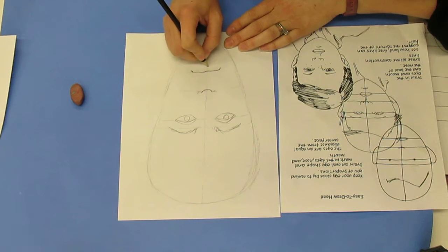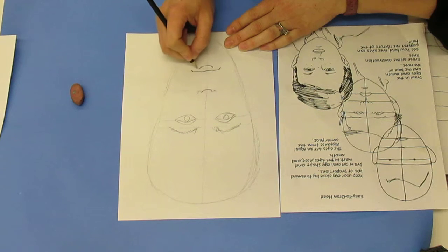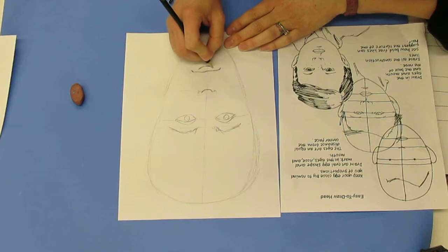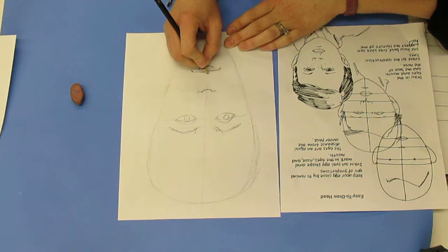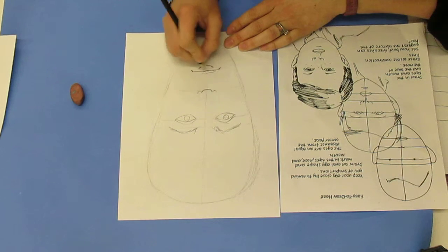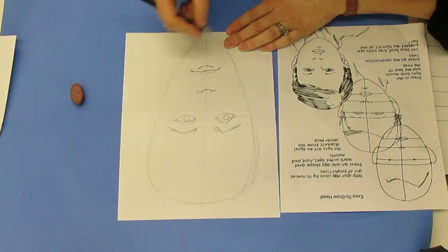Then I'm going to put in the bottom line for the bottom of my lip. I don't want to connect it all the way because mine doesn't really connect, it just changes color a little bit. And then I have a very tiny top lip, but you want to see what your lips look like in the mirror. So you're drawing your face, not mine.